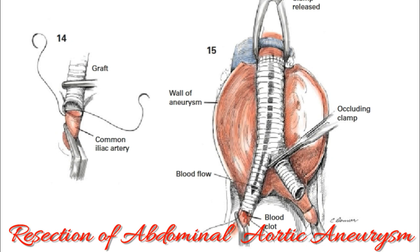Vascular clamps are temporarily applied to the iliac limbs of the graft, and the aortic clamp is momentarily released to check the proximal suture line for hemostasis and pre-clotting of the graft. Should leaks be noted in the anastomosis, they can be controlled by individual mattress sutures. The iliac anastomoses are done in the same manner as that of the aorta. Just before completion of the anastomosis, the aortic clamp is opened momentarily to flush any clots that may have accumulated in the aorta or graft. This flushing greatly lessens the incidence of subsequent thrombosis in either extremity.